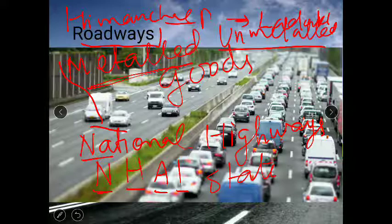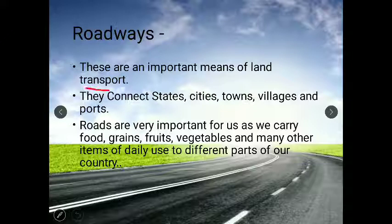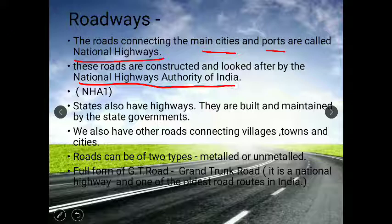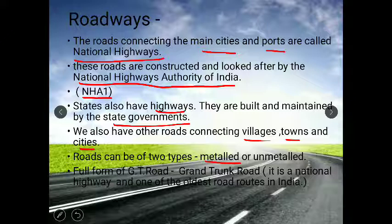Now a few important points about roadways: they are an important means of land transport and connect states, cities, towns, villages, and ports. Roads carry food grains, fruits, vegetables, and daily-use items to different parts of the country. Roads connecting main cities and ports are called national highways, constructed and maintained by NHAI. States also have highways maintained by state governments. Roads can be of two types: metalled, which are pakka roads, and unmetalled, which are kachha roads.